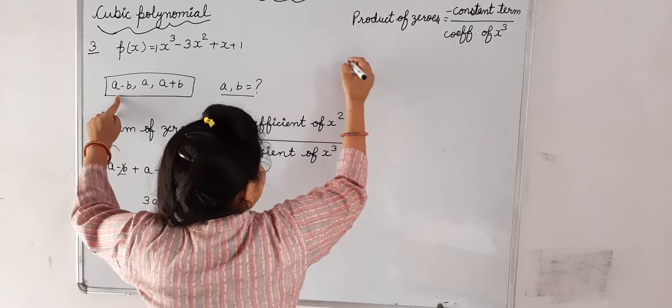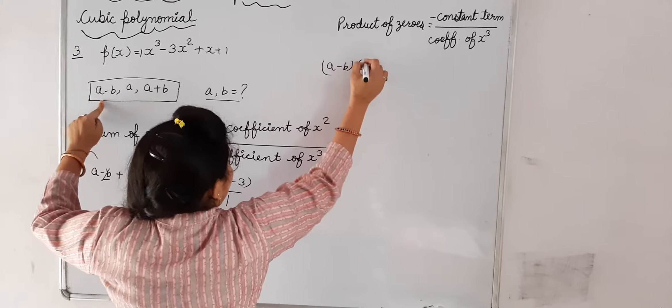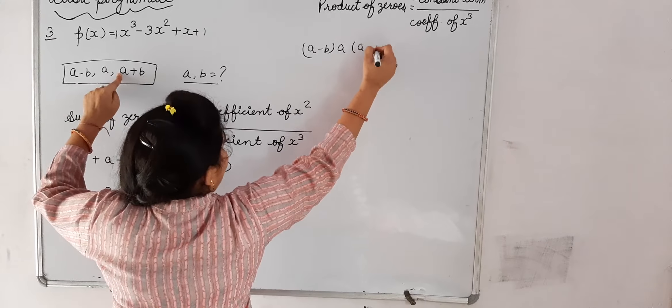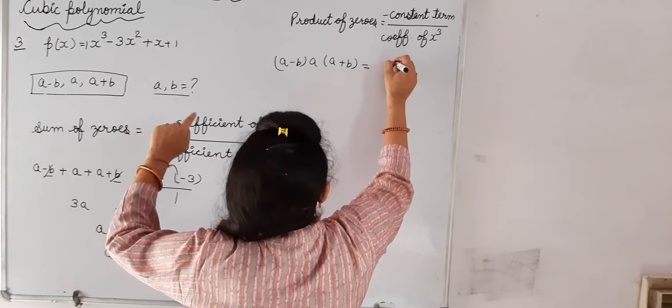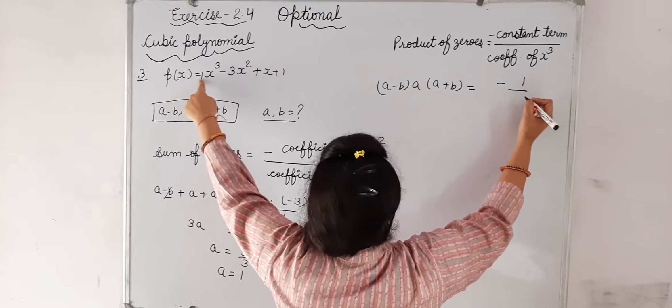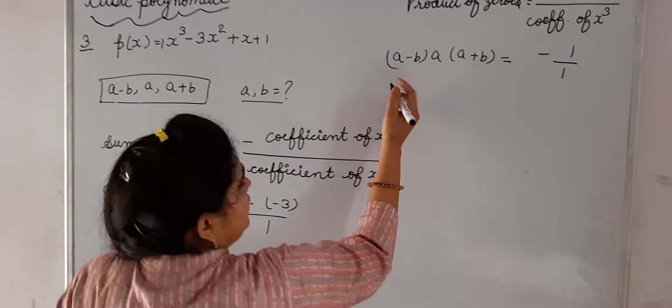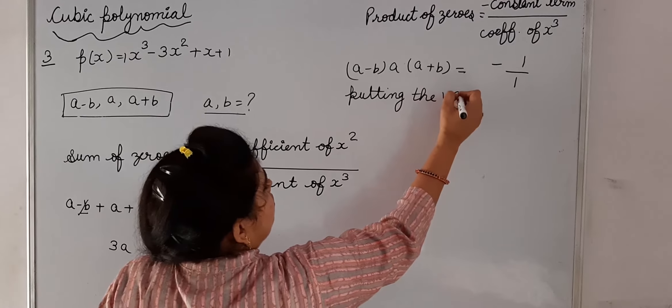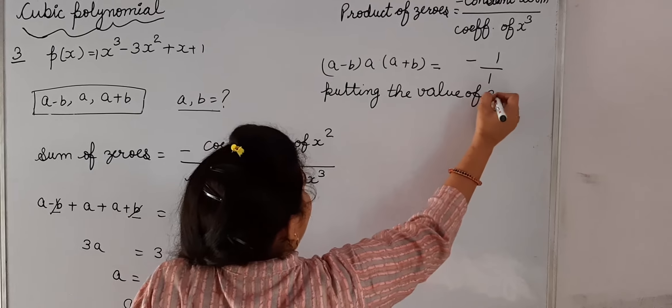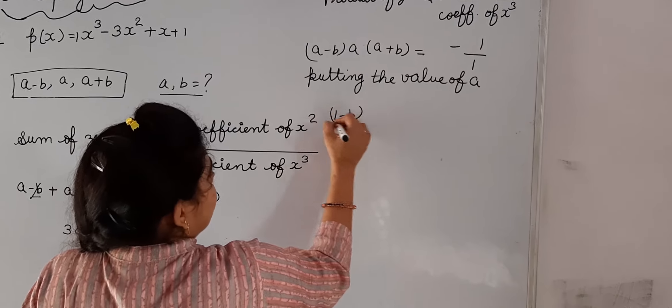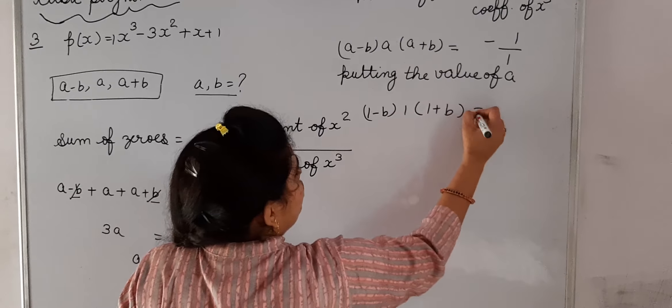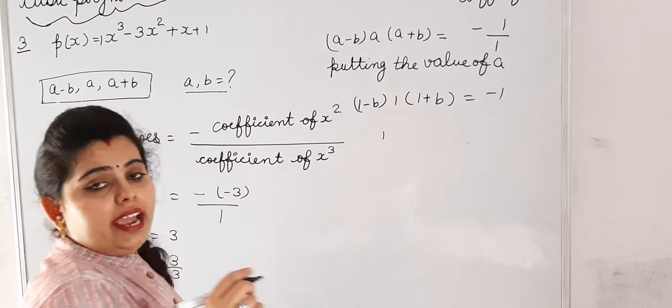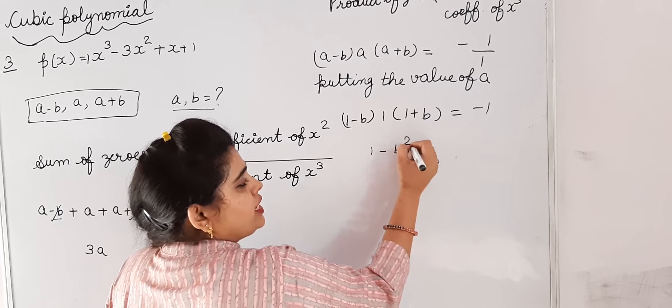the product of zeros (a - b) × a × (a + b) equals -1/1 = -1. Putting the value of a = 1, we get (1 - b) × 1 × (1 + b) = -1. Here, using the identity (a - b)(a + b) = a² - b², this gives 1 - b² = -1.